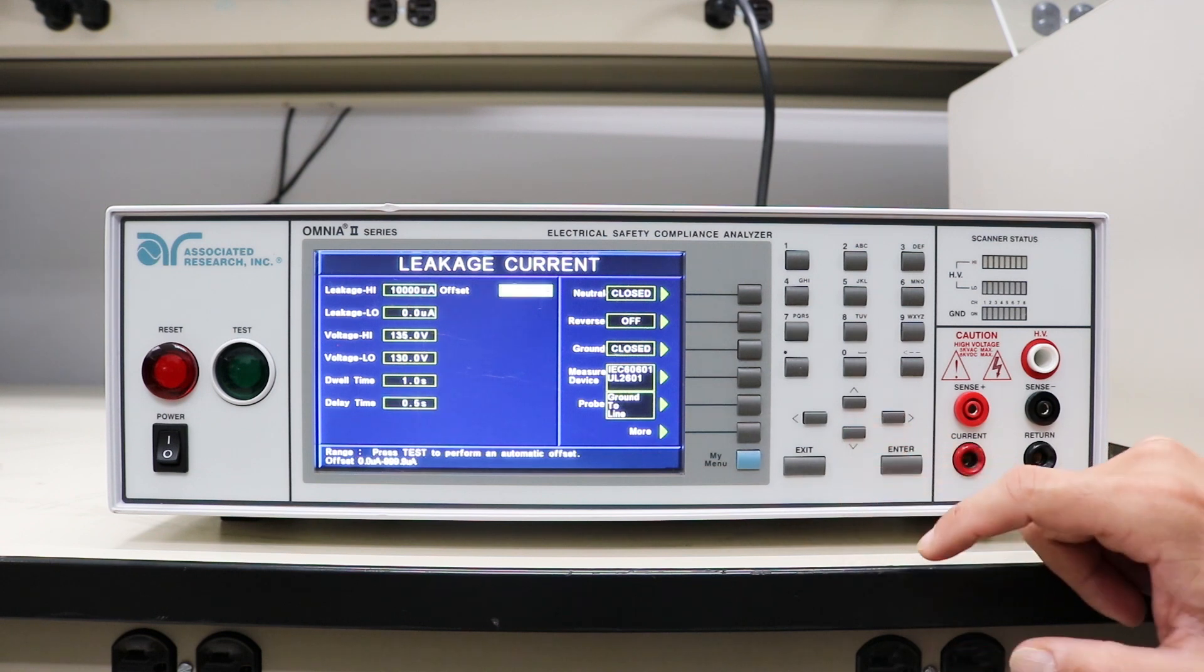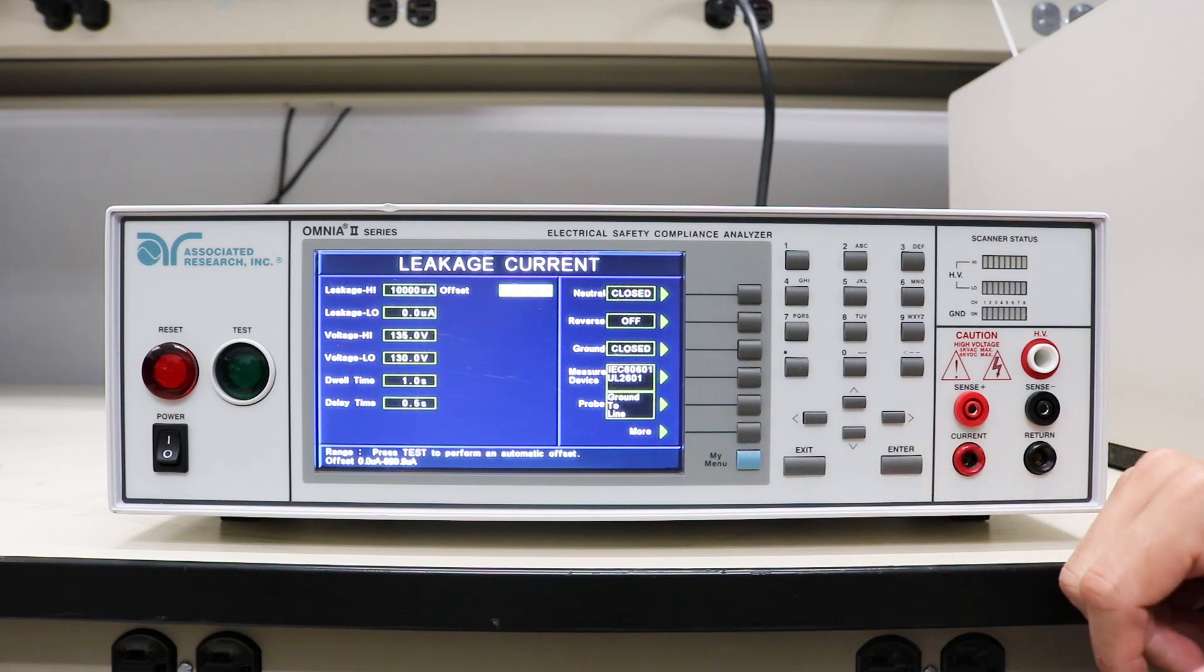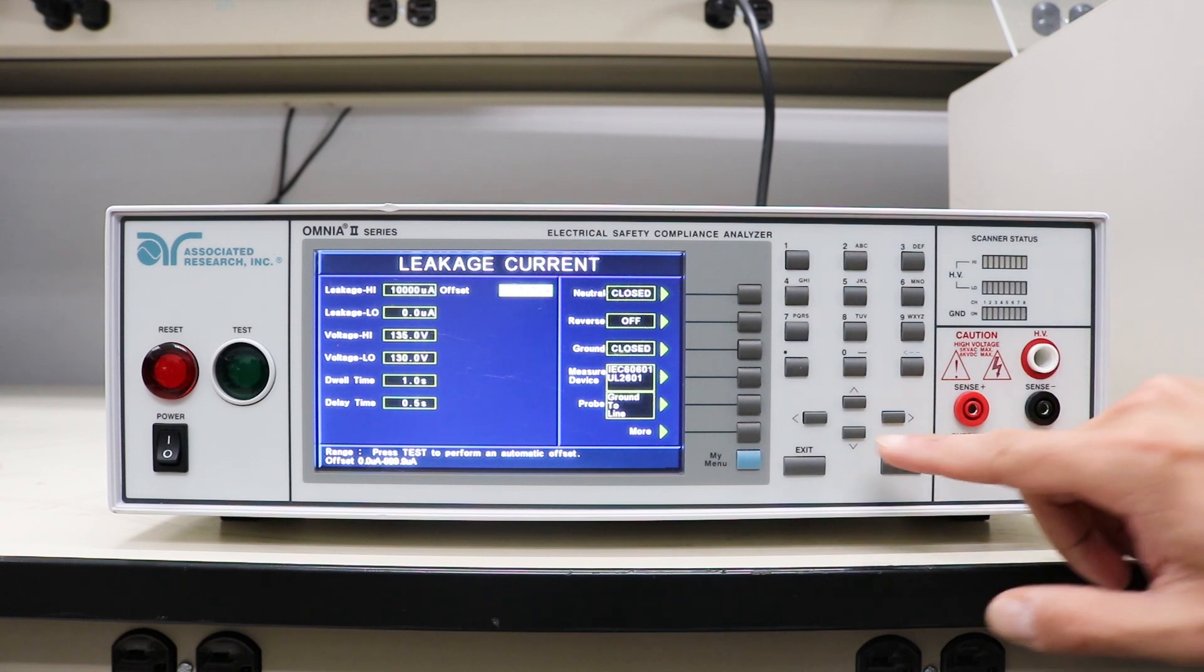That's followed by the offset parameter. If you run into issues with extra leakage current or system leakage, you can always use this parameter to offset any stray leakage that you're going to see.